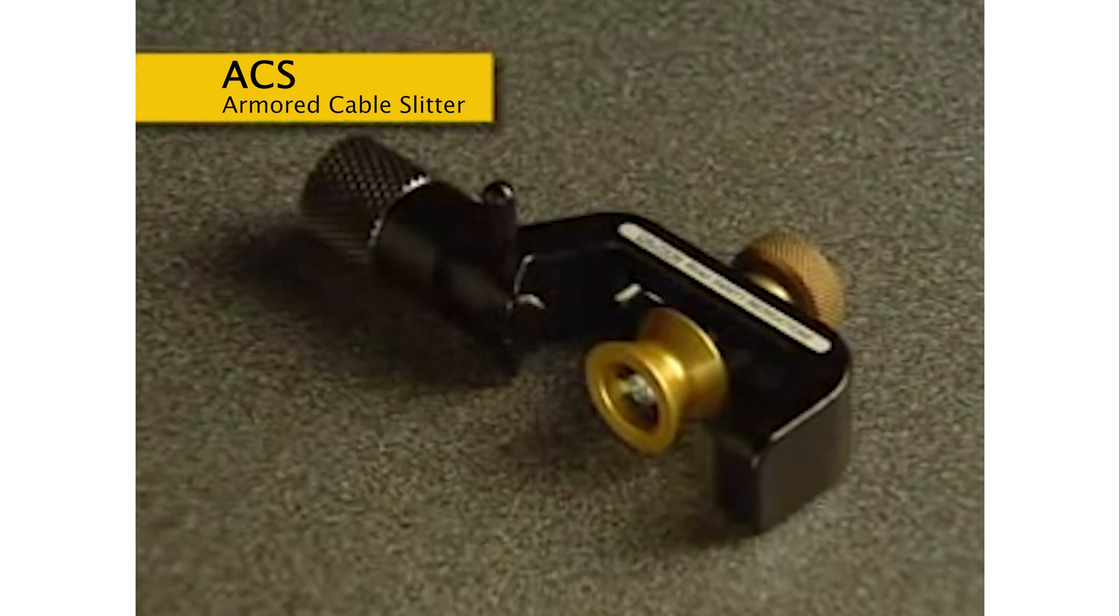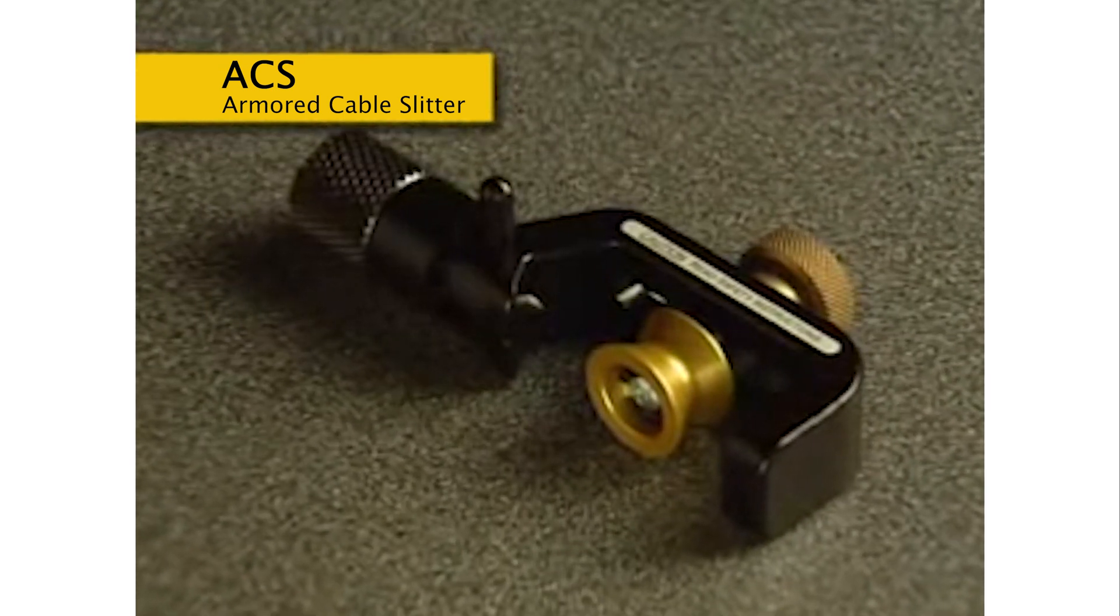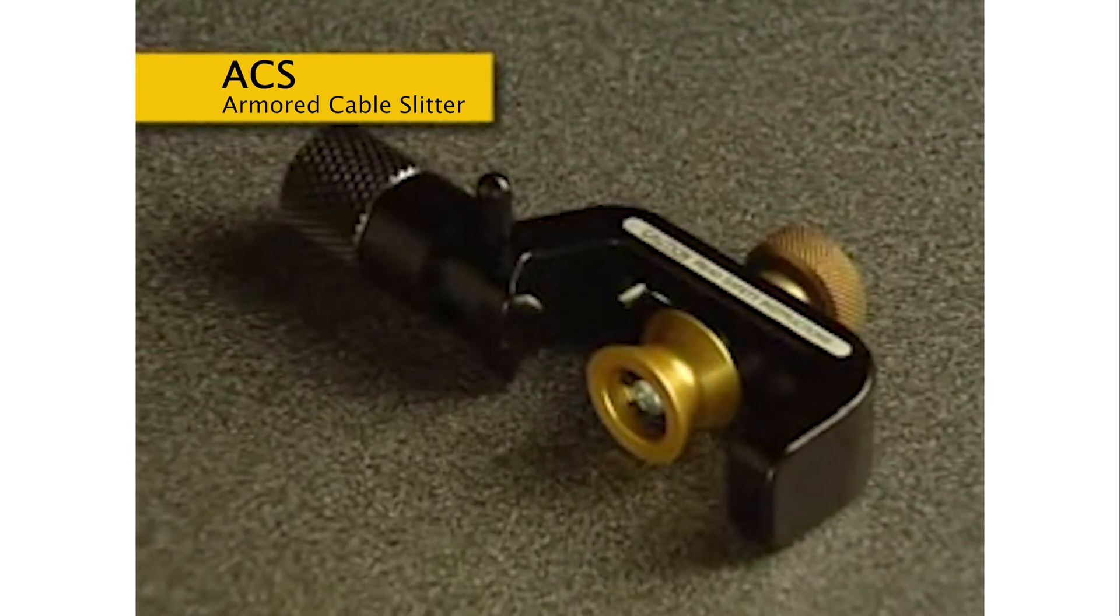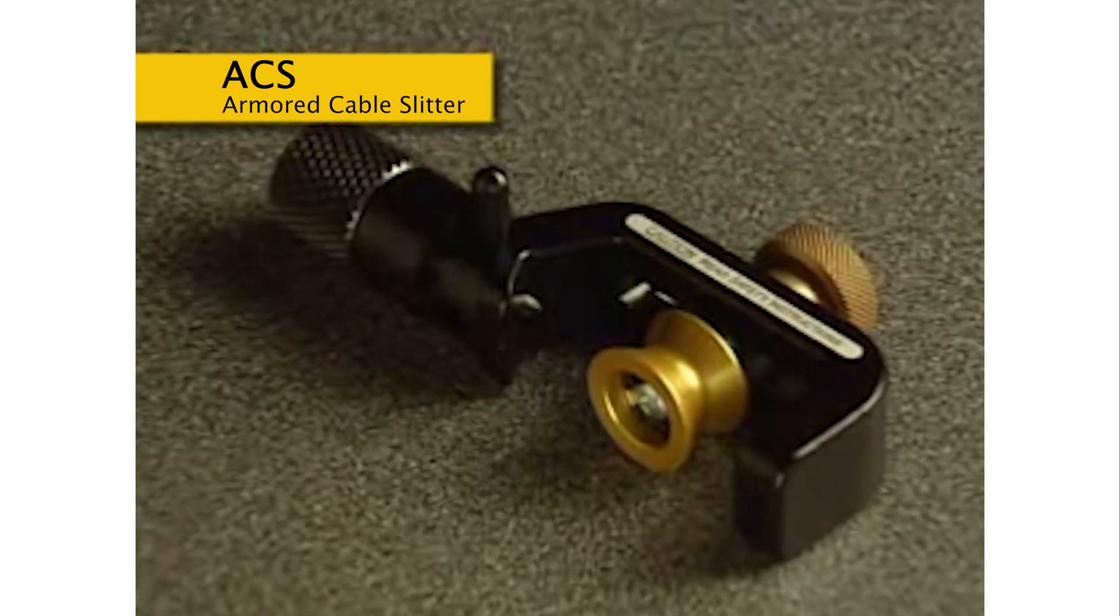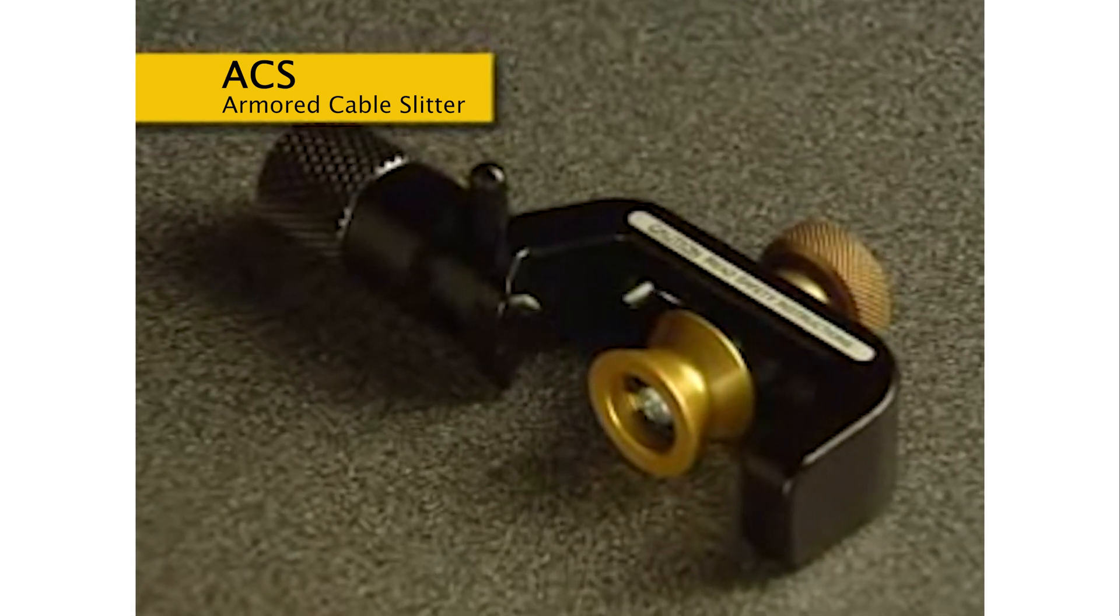The ACS Armored Cable Slitter is ideal for slitting the corrugated copper, steel or aluminum armor layer on fiber feeder, central tube, stranded loose tube fiber optic cables and other armored cables.